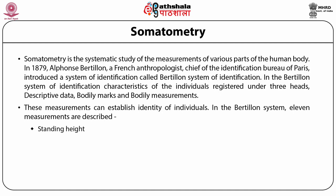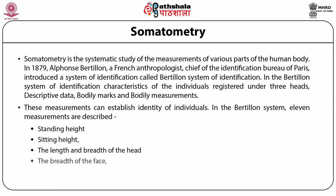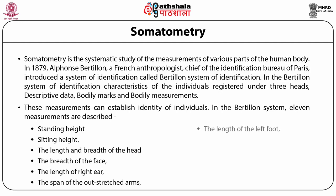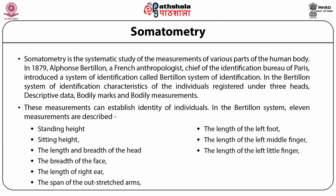The 11 body measurements are: first, standing height; second, sitting height; third, the length and breadth of the head; fourth, the breadth of the face; fifth, the length of the right ear; sixth, the span of the outstretched arms; seventh, the length of the left foot; eighth, the length of the left middle finger; ninth, the length of the left little finger; tenth, the length of the left forearm; and eleventh, the length of the hand.